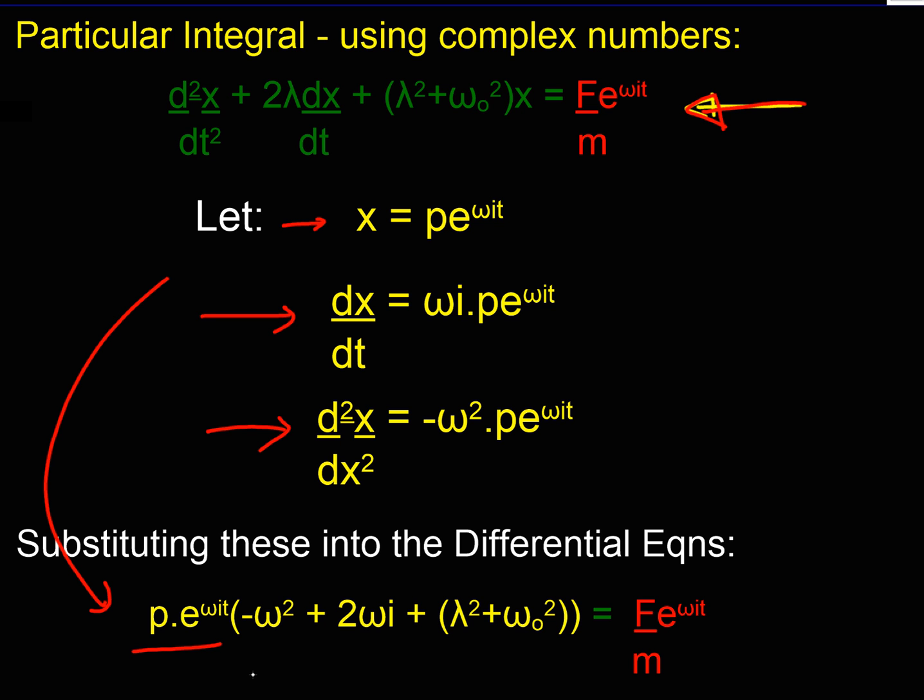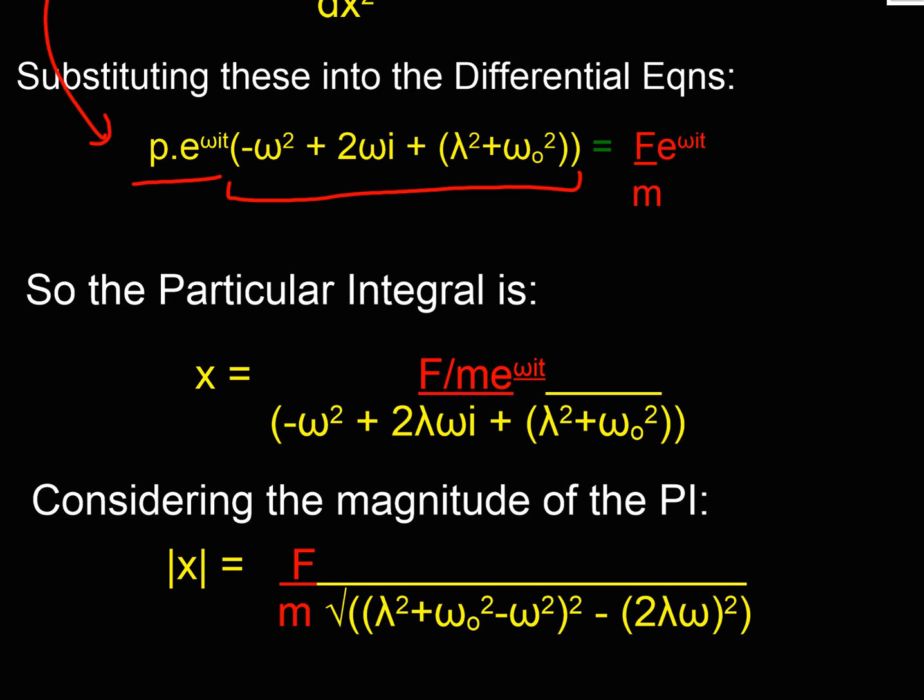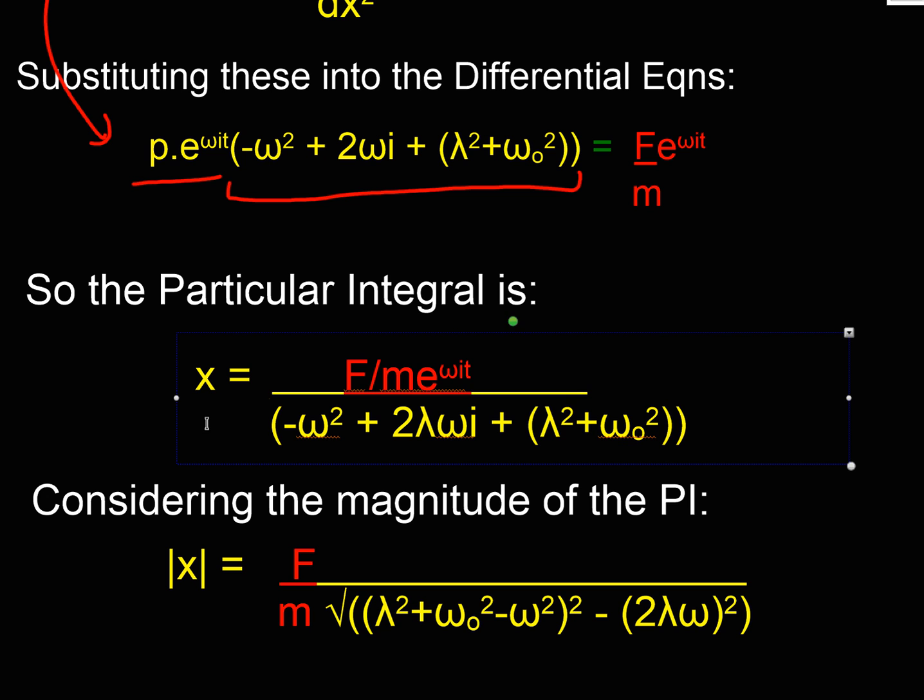If I substitute those into the left hand side of my equation, p·e^(ωit) is a factor, and I've put the rest into a bracket. So I can now get rid of my e^(iωt)'s, and I would find a value for p, and then I can rearrange my equation to make that flow better.